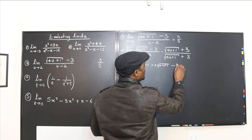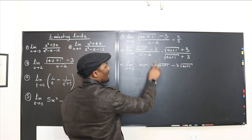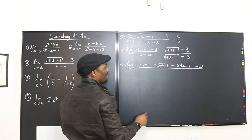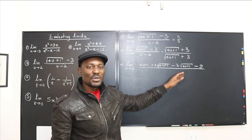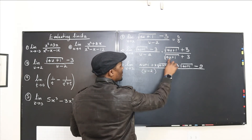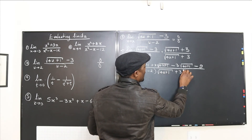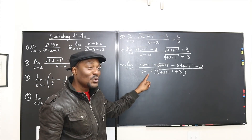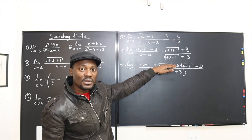Multiplying gives: 4u plus 1 minus 9, which simplifies to 4u minus 8. Don't waste your time distributing the denominator — just put them side by side: (u minus 2) multiplied by (√(4u+1) plus 3). Whatever is causing the trouble in the denominator will be eliminated, so don't distribute it. Just distribute the top.